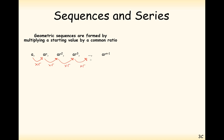By the time we've got up to the nth term in our sequence, we've got A times R to the power of n minus 1. Notice how the second term will have one R multiplying on it, the third term will have two multiples of R, the fourth term will have three multiples of R, so the nth term has n minus 1 lots of R multiplying by A.